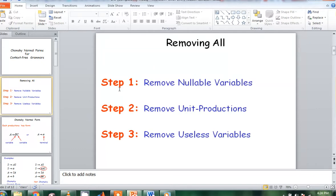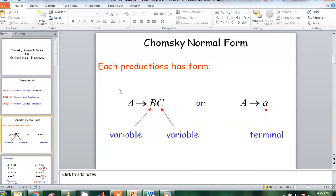Now I will tell you how to remove the nullable values. We have to remove the unit production, which is only one. Unless variables, which we need to remove them, each production has a form: two variables or terminal.